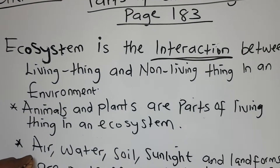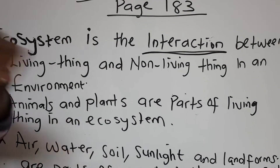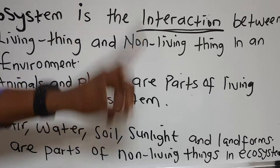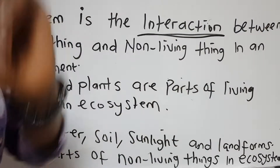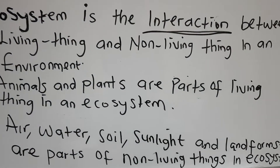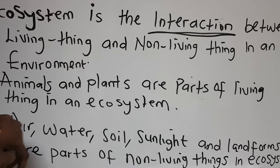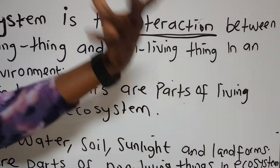Number two, we have air, we have water, we have soil, we have sunlight, and landforms. These are examples of non-living things. Do not forget about landforms.